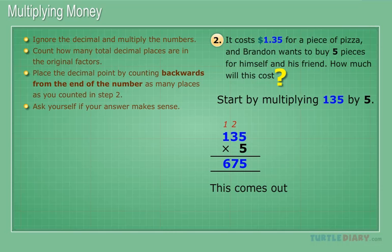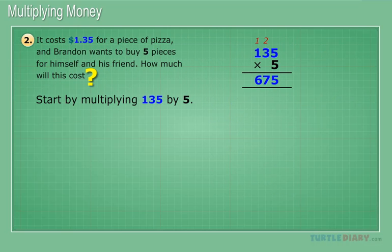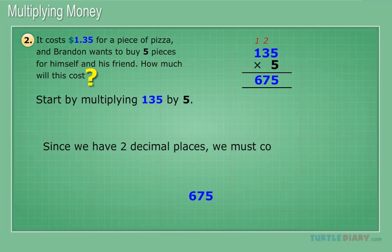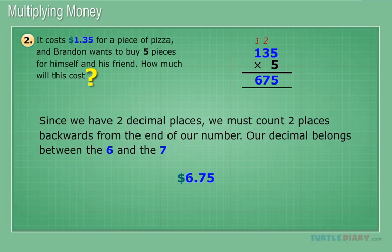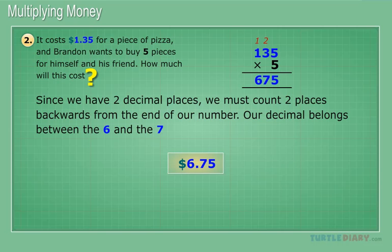This comes out to 675. Now we must count how many decimal places are in the original factors. $1.35 has two decimal places while 5 has none, thus we have two total decimal places. Since we have two decimal places, we must count two places backwards from the end of our number. Our decimal belongs between the 6 and the 7. $6.75.